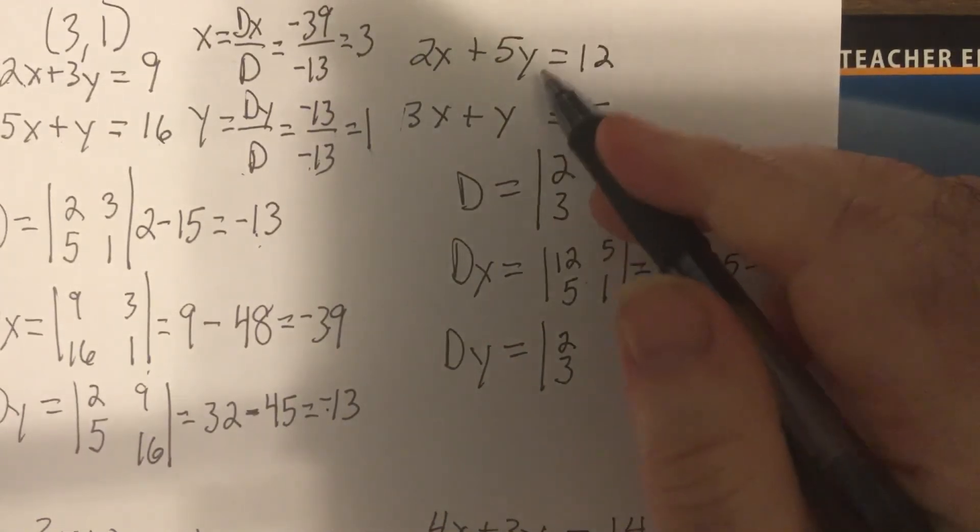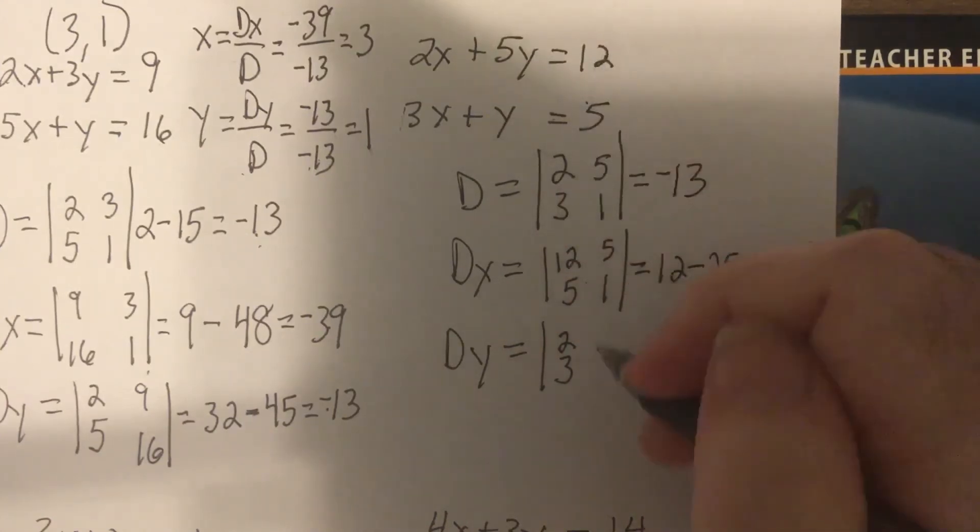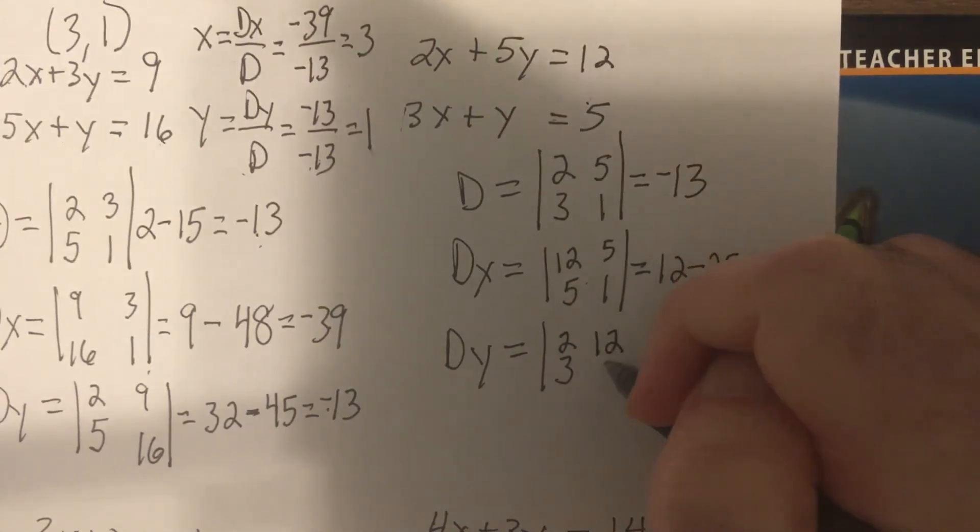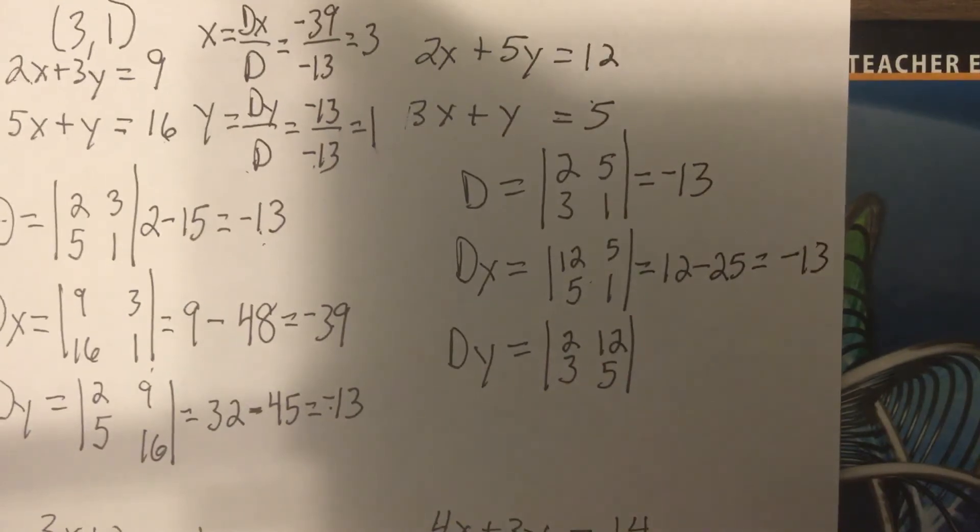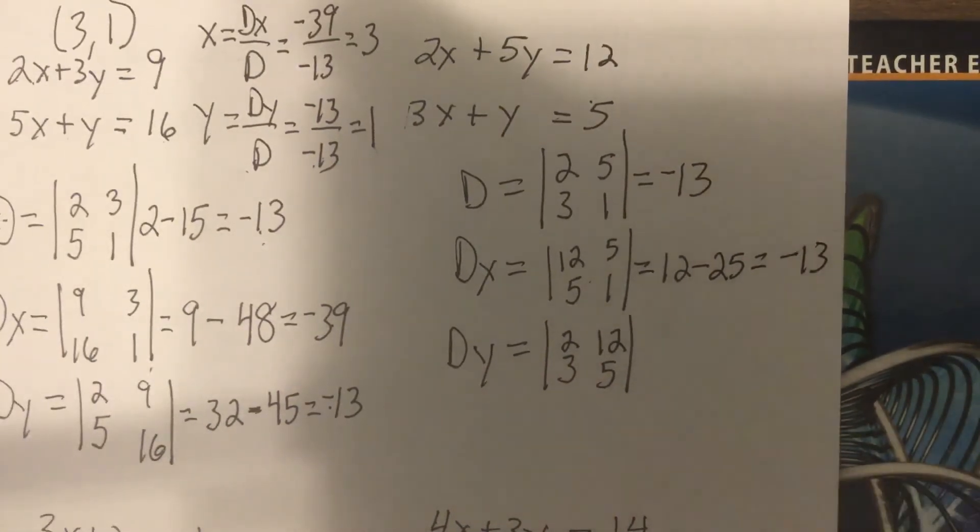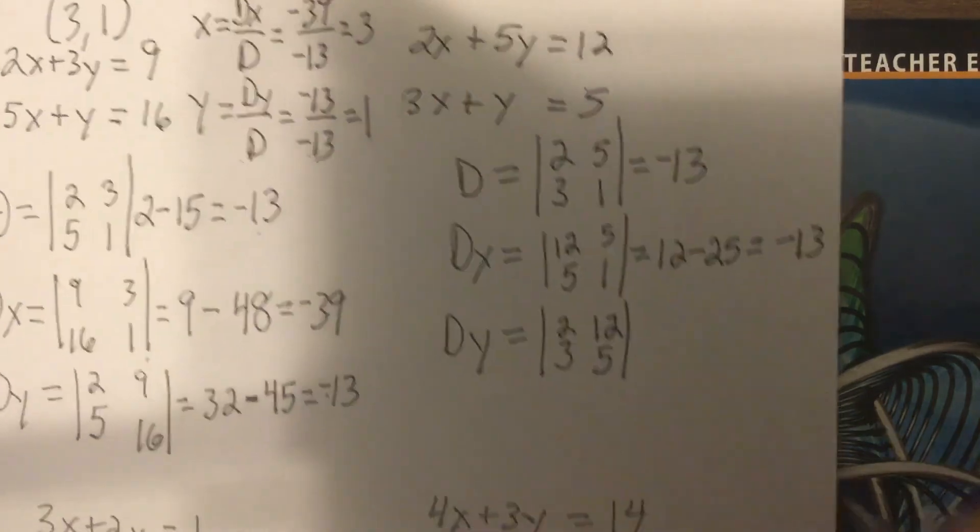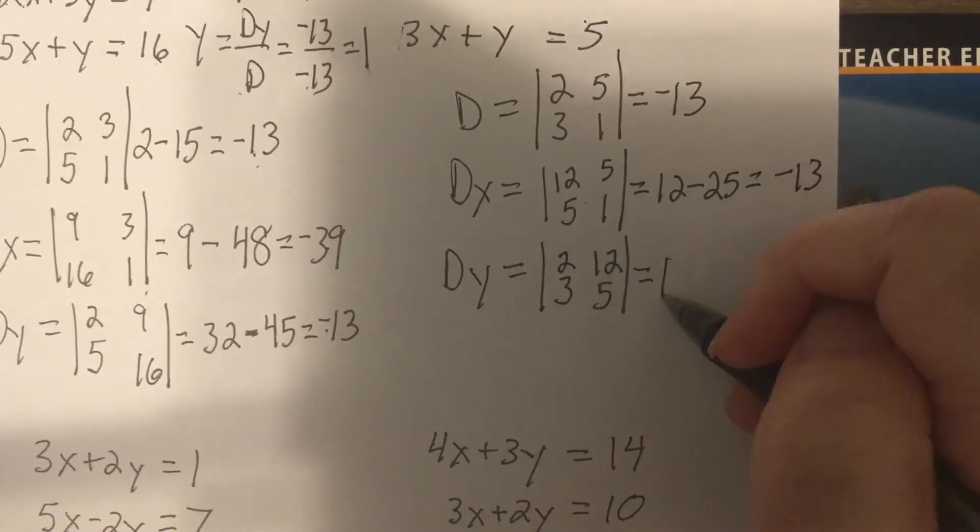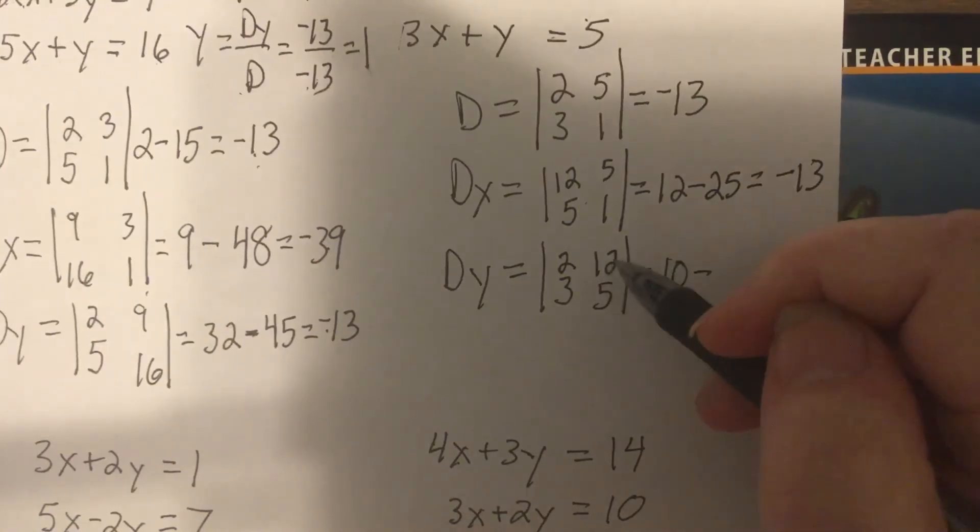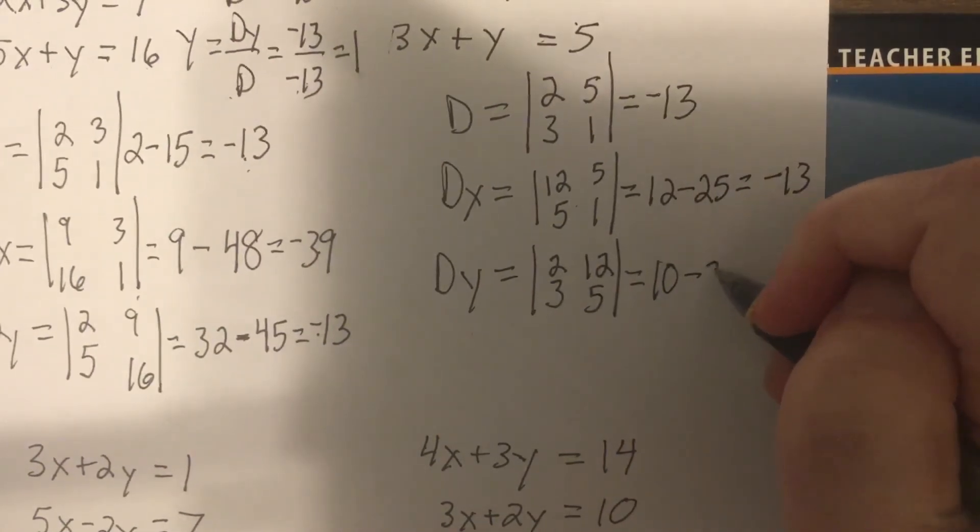and switch the Y with the constants. I got a stupid fly bugging around. So, it would be 10 minus 36, which is a negative 26.